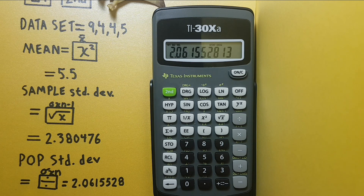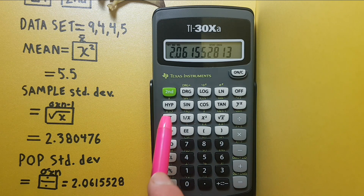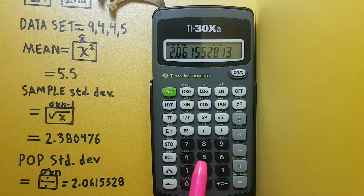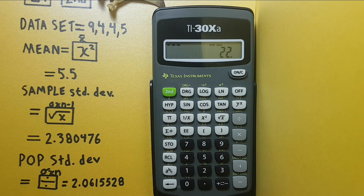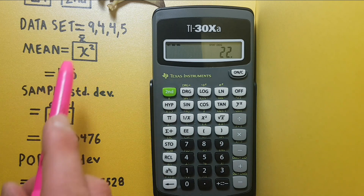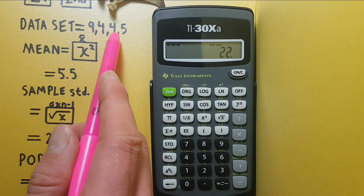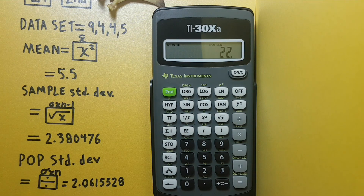We can also find the sum of all of our numbers by pressing the second function left bracket, which gives us a sum of 22, which makes sense: 9 plus 4 plus 4 plus 5 is 22.